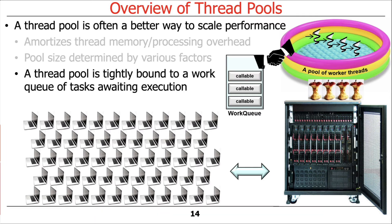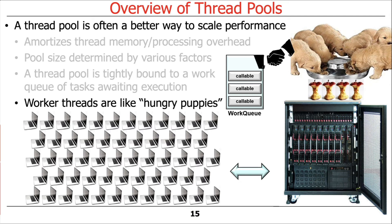A thread pool is typically bound to a work queue of tasks awaiting execution. When work comes in, rather than creating a new thread, we put the work item onto the work queue, and the threads in the pool pull items off the queue and process them. I think of worker threads like hungry puppies — they want to chomp away and get the next unit of work. The threads in the pool are eager, like a puppy, to do something useful.